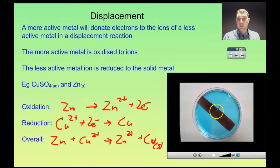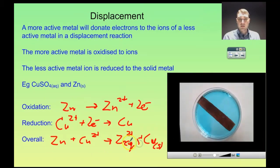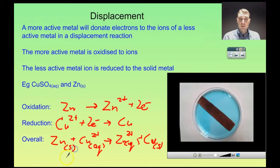We're getting solid copper from the copper ions that are being reduced, and we can see the brown color really nicely now. The zinc ions are going into solution as aqueous, the copper ions from the copper sulfate were dissolved in water so that's aqueous, and our zinc was solid metal when we put it in.